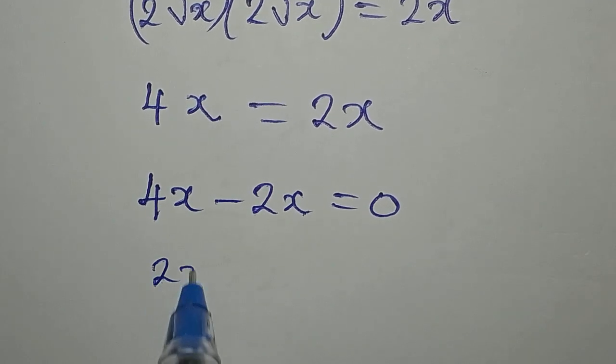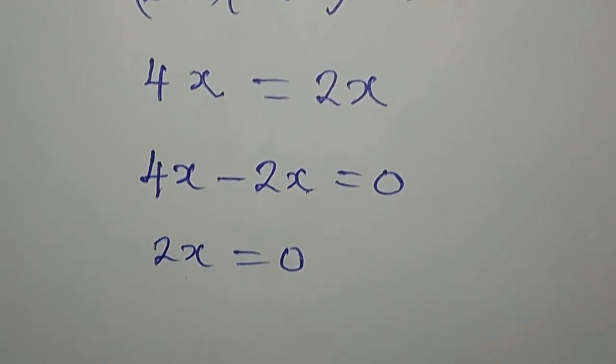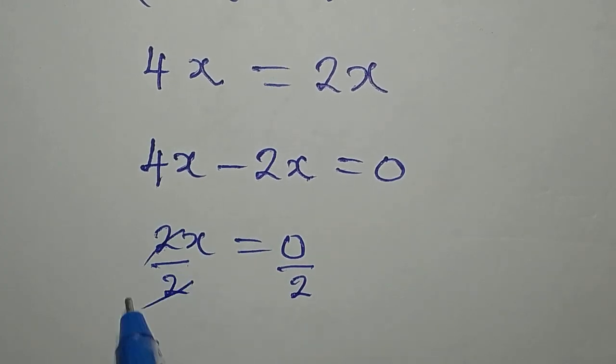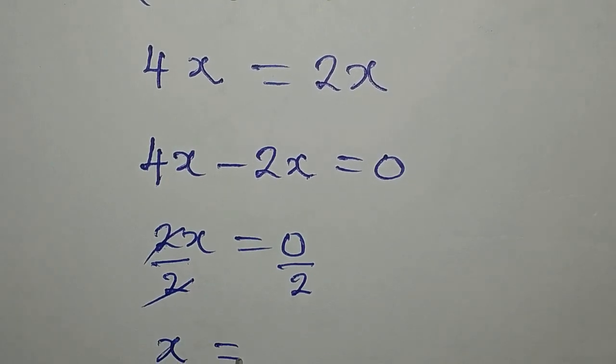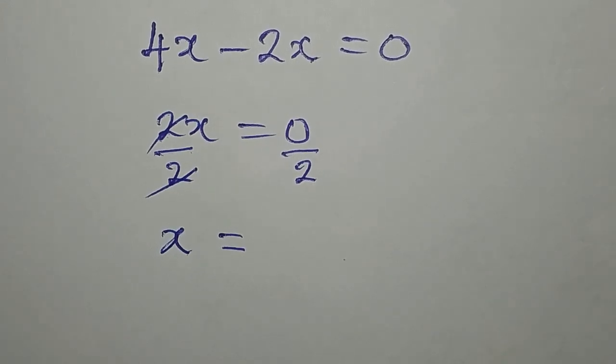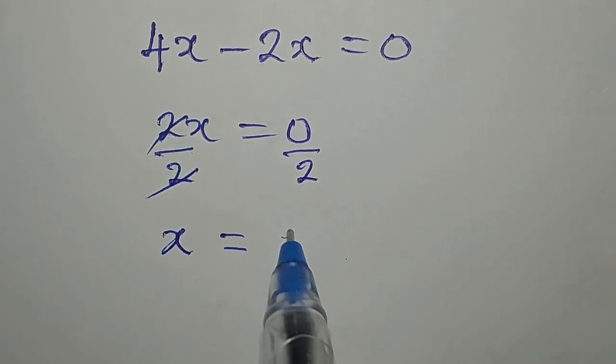4x minus 2x is 2x, which is equal to 0. Now, divide this by 2, divide by 2, 2 goes there, and x is equal to 0 over 2. And 0 divided by 2 is possible, as it gives us 0.